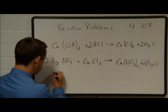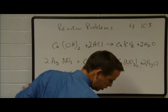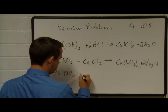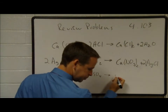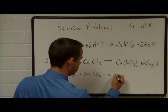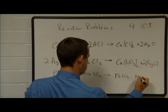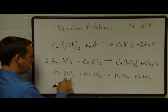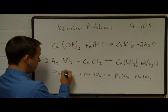Lead nitrate, Pb(NO3)2, reacts with sodium sulfate to form lead sulfate and sodium nitrate. We need to identify what kind of lead — lead 2 or lead 4. We'll assume lead 2.